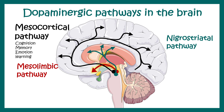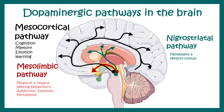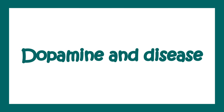The mesocortical pathway is associated with cognition, memory, emotion, and learning. The nigrostriatal pathway is involved in sensory stimuli, movement, and motor control. The mesolimbic pathway is specifically associated with pleasure, reward-seeking behaviors, addiction, and emotion.